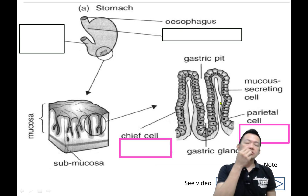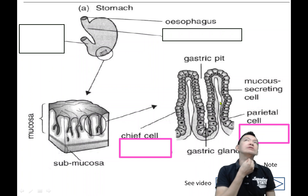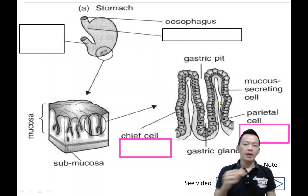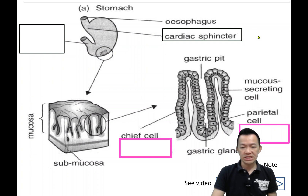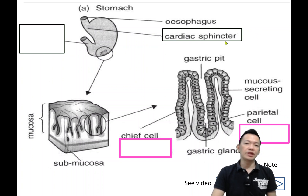So after your mouth, your food will become small food boluses and pass through the esophagus. But before they enter the stomach, they have to pass through a piece of muscle. This muscle is called the cardiac sphincter.